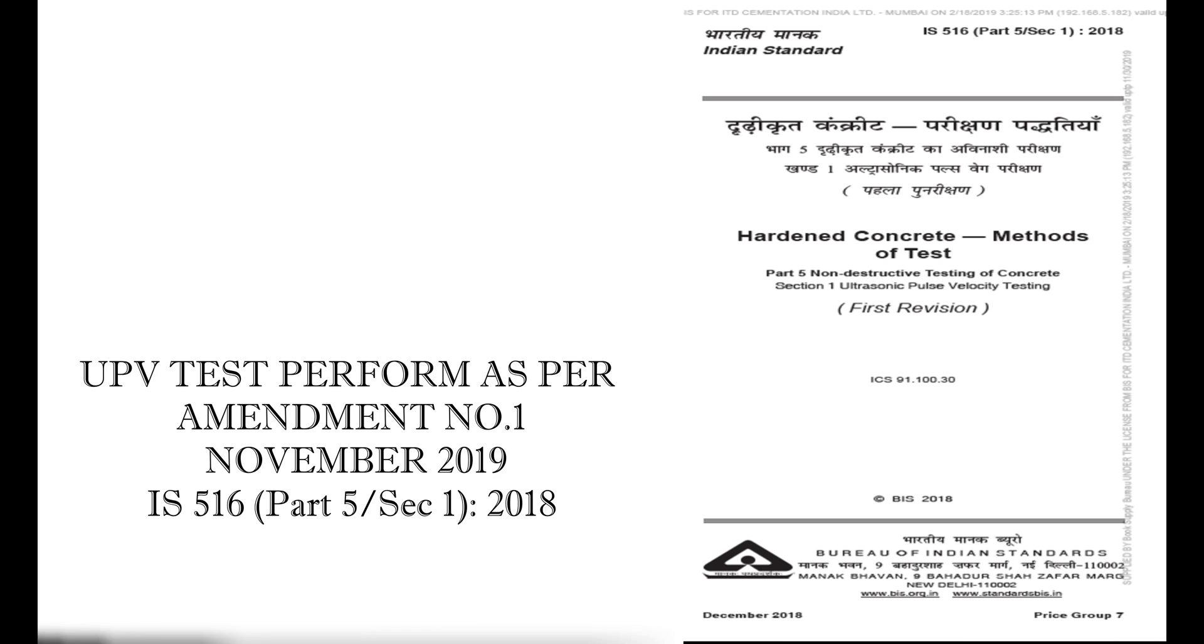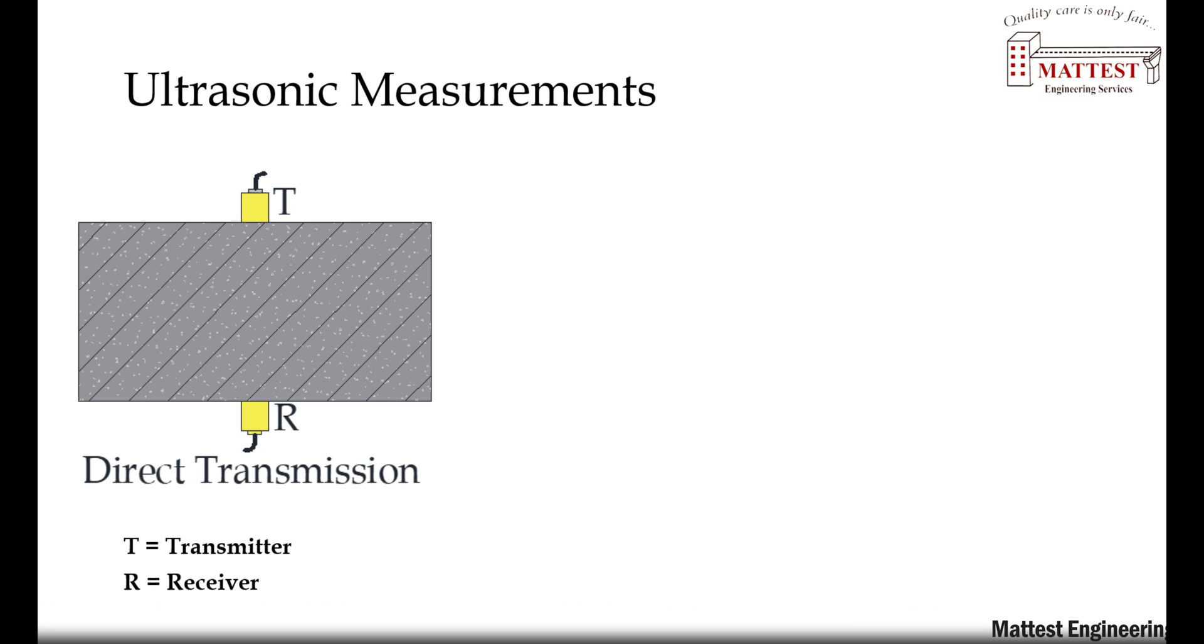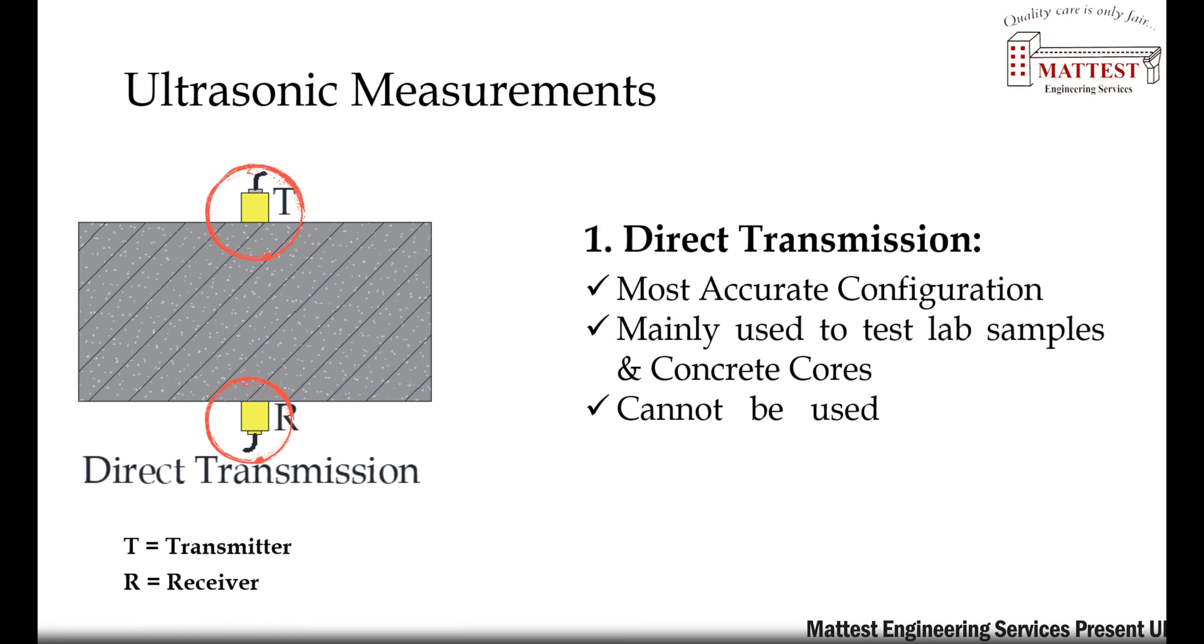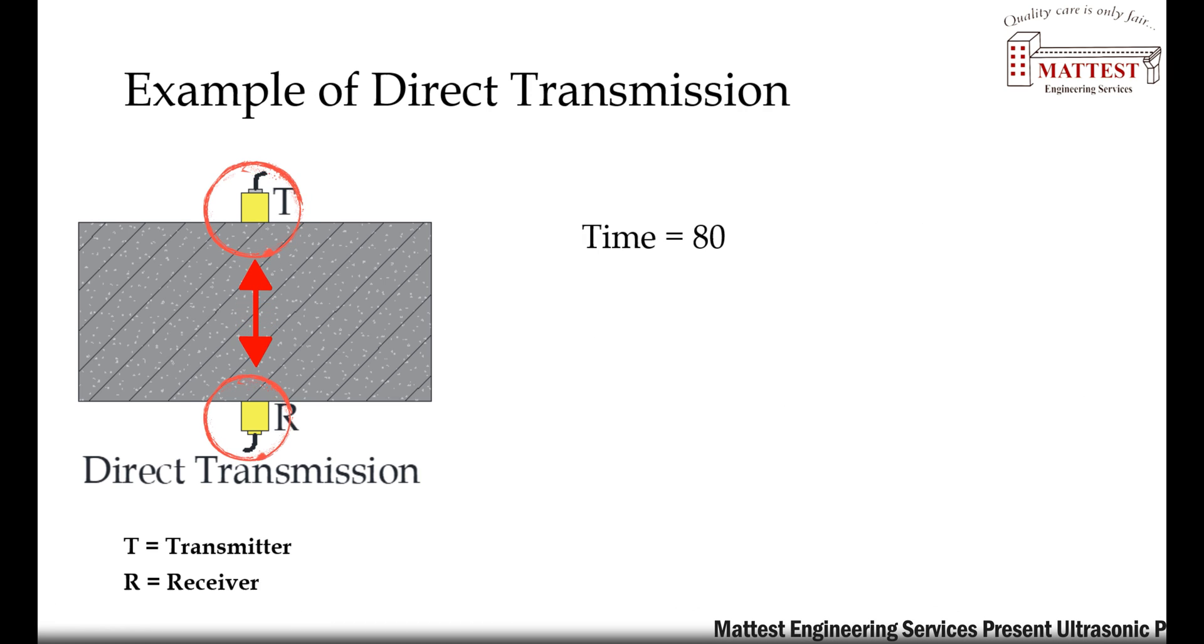UPV test performed as per Amendment 1st November 2019, IS 516 Part 5 Section 1 2018, ultrasonic measurements. First, direct transmission: most accurate configuration, mainly used to test lab samples and concrete cores, cannot be used for elements with one side access. Example of direct transmission.